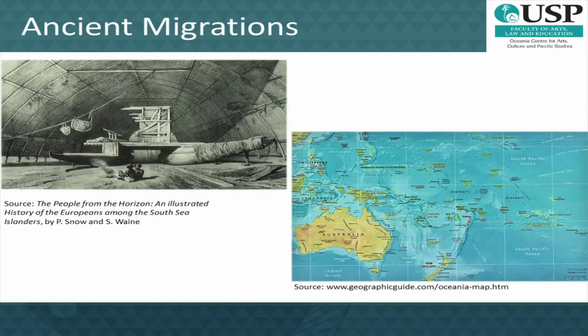The settlement of the Pacific may be divided into two broad phases. One, a Pleistocene — the world's most recent period of repeated glaciations from about 1.8 million to 10,000 years ago — of Sahul land, that is greater Australia, including Tasmania and New Guinea, and islands of near Oceania, the Bismarcks to the Solomon archipelagos. And two, a mid-Holocene, about 3,000 years ago, colonization passed the main Solomon Islands into remote Oceania.